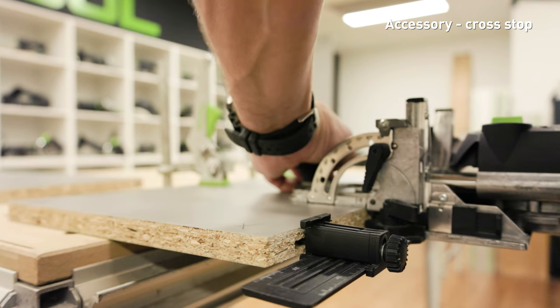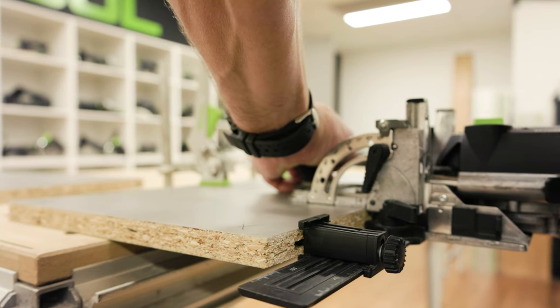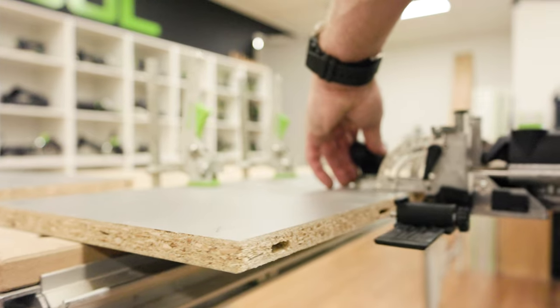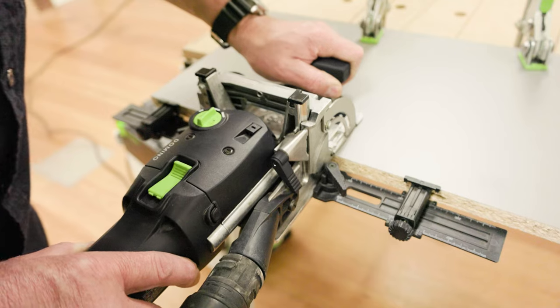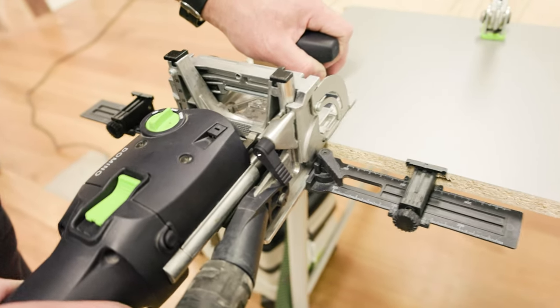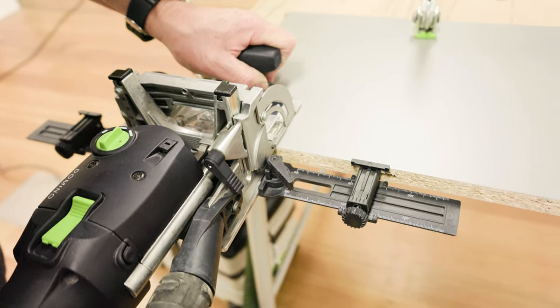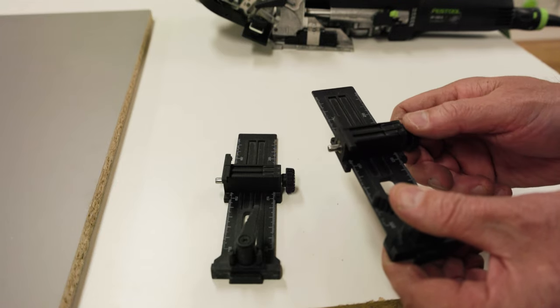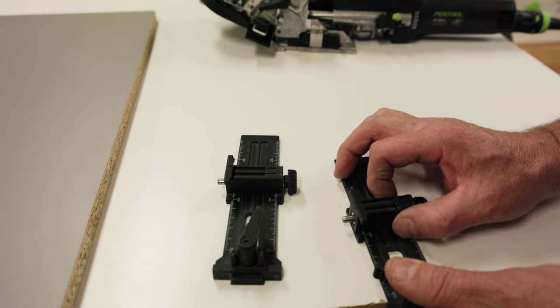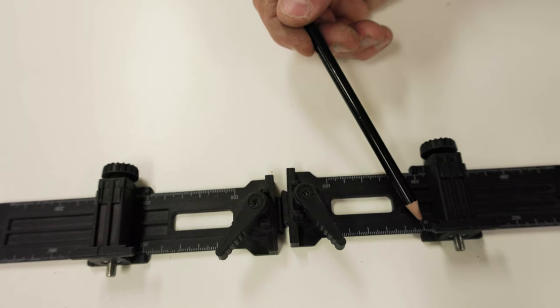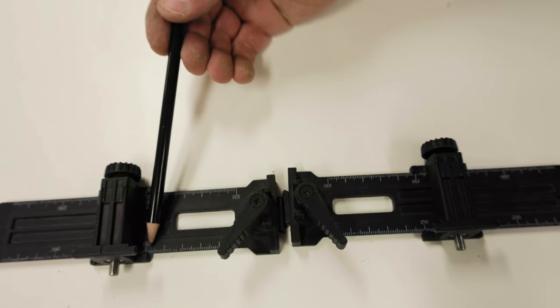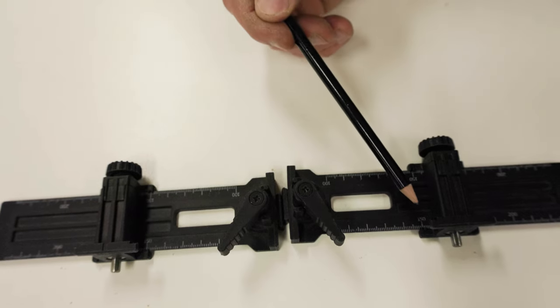The optional cross stops extend the position of the locating pins for consistent repeatable domino spacing. This is a benefit when working with longer lengths and materials and needing to mirror the domino positions on both surfaces for joining. Loosen the clamping knob on the adjustable locating pin and slide the pin to the desired measurement. Before tightening the clamping knob, make sure both measurements on the cross stops are accurate to the same measurement.